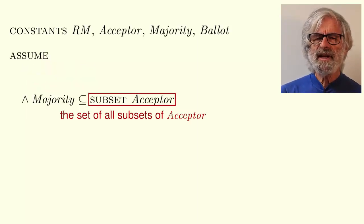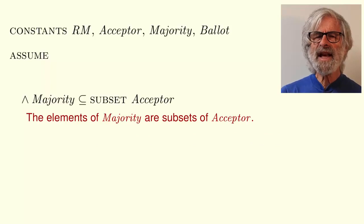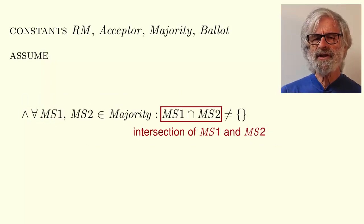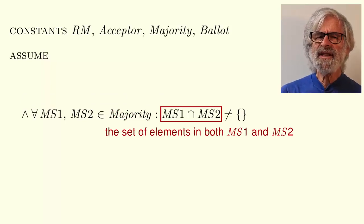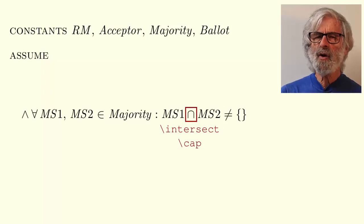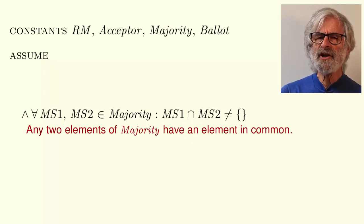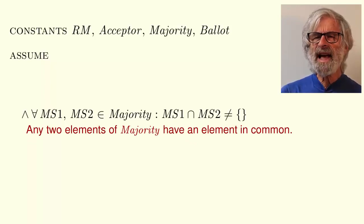Subset acceptor is the set of all subsets of the set acceptor. Mathematicians call it the power set of acceptor and write it p of acceptor. The conjunct asserts the assumption that every element of majority is a subset of the set acceptor. This sub-expression is the intersection of the sets ms1 and ms2. It is the set consisting of all elements in both ms1 and ms2. The intersection symbol is typed either backslash intersect or backslash cap. The conjunct asserts that every two elements of the set majority are sets having at least one element in common.